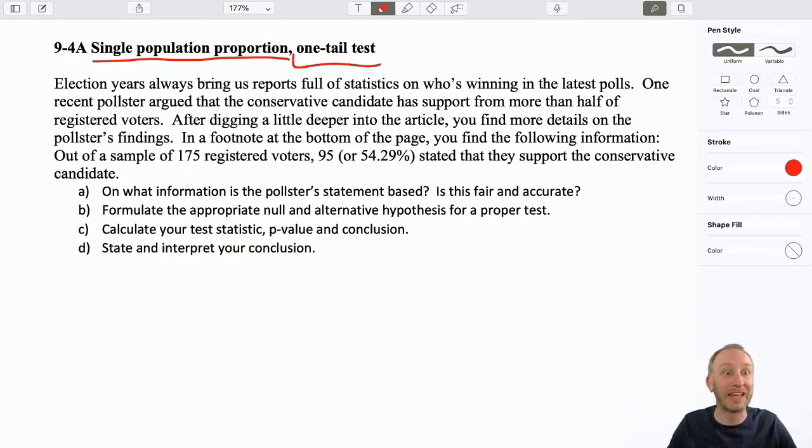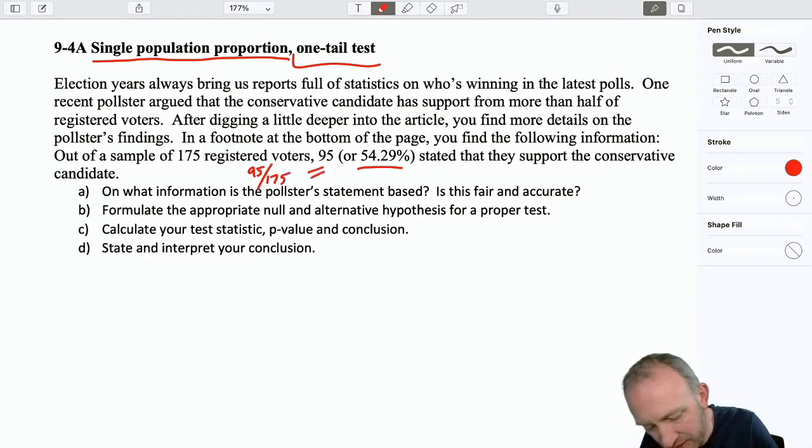So let's go through the question here and see if we can figure it out on our own without having it told to us. So here we're looking at election years. There's always elections going on somewhere and so there's always lots of statistics that are being reported. You read about them in all kinds of various media about who's winning in the latest polls. One pollster argued that the conservative candidate has support from more than half of the registered voters.